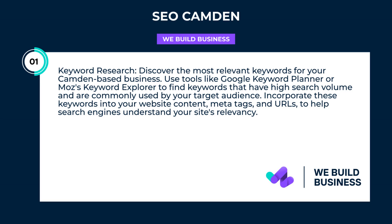Keyword research. Discover the most relevant keywords for your Camden-based business. Use tools like Google Keyword Planner or Moz's Keyword Explorer to find keywords that have high search volume and are commonly used by your target audience. Incorporate these keywords into your website content, meta tags, and URLs to help search engines understand your site's relevancy.